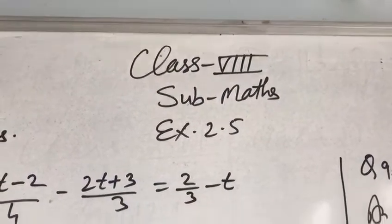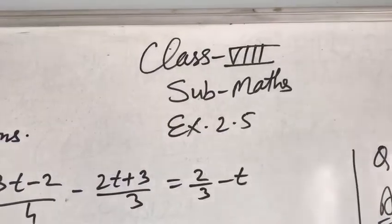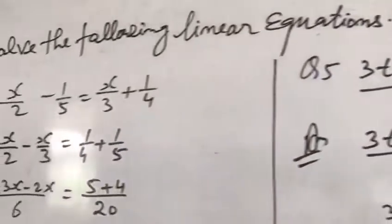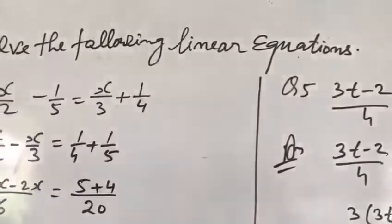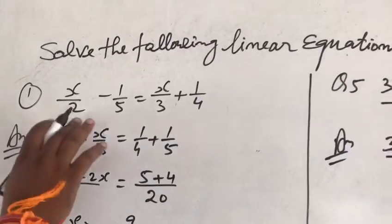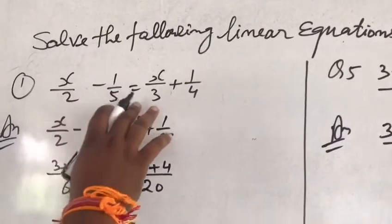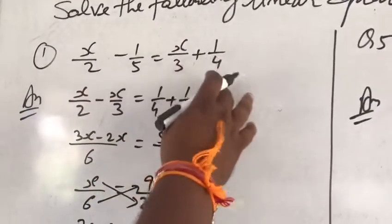Class 8 Subject Mathematics Exercise 2.5. Question number 1 is solve the following linear equations. Question number 1 is x upon 2 minus 1 upon 5 equal to x upon 3 plus 1 upon 4.